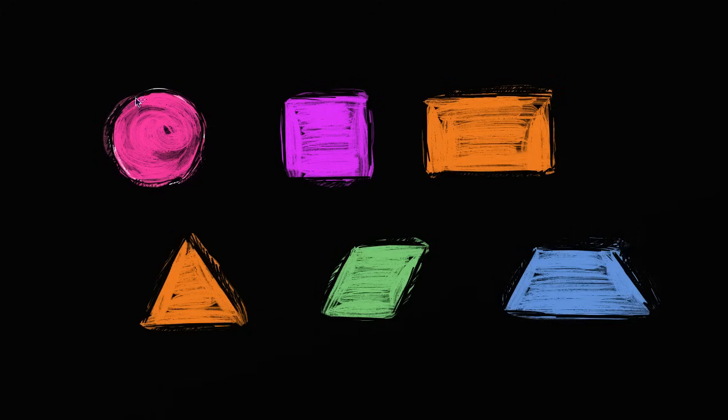I have a bunch of shapes here. Let's think about what they are. So this first shape here, you probably recognize it. It is the shape of the moon in the sky, at least on a full moon. And we call it a circle.